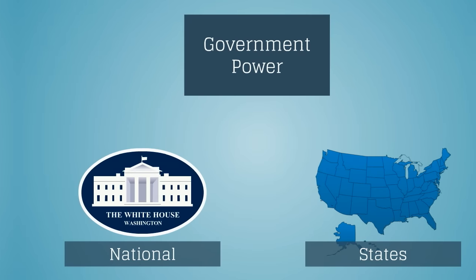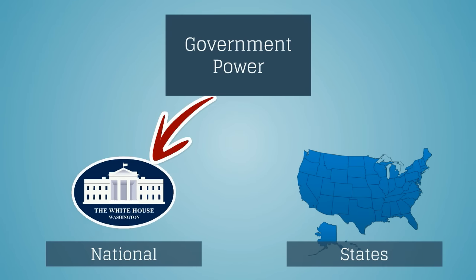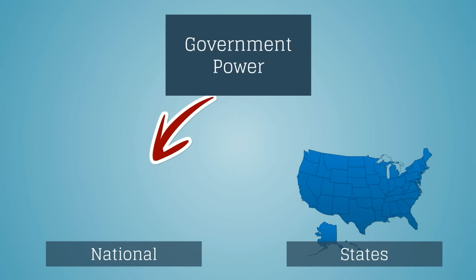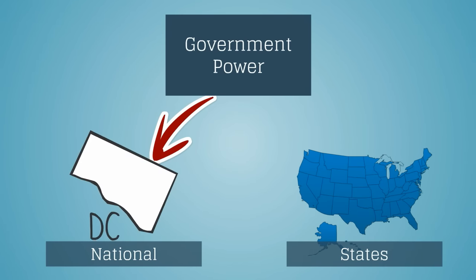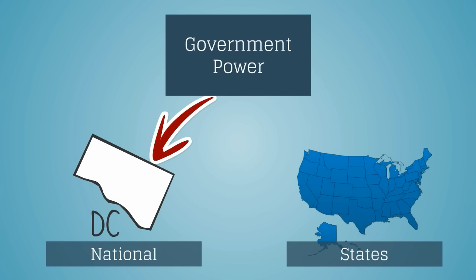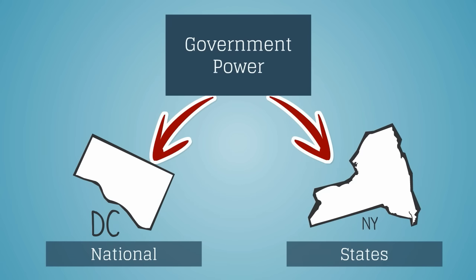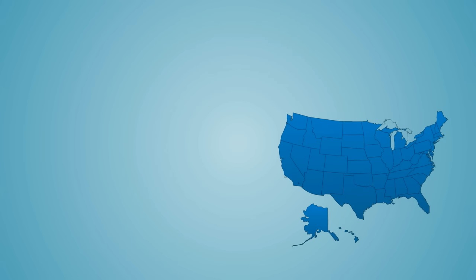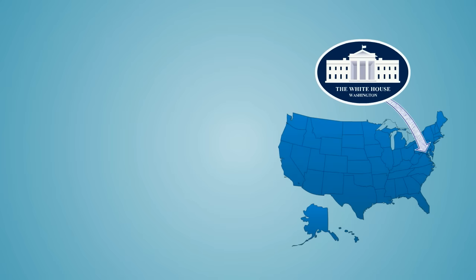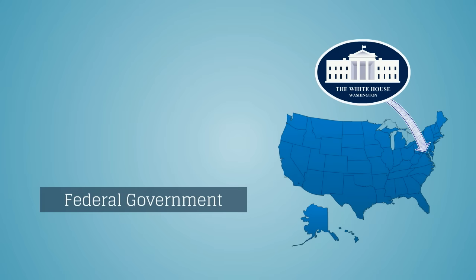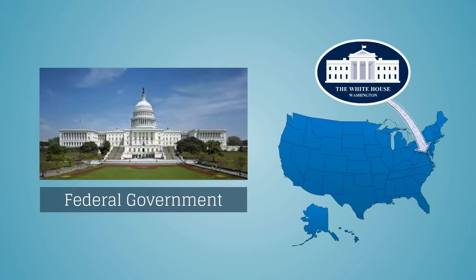In the United States, some powers belong to the national government in Washington, D.C., and other powers belong to the state governments, such as the state government in New York. We call the national government in Washington, D.C. the Federal Government.